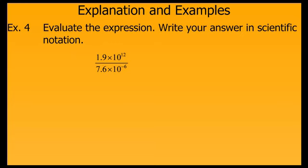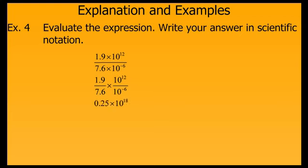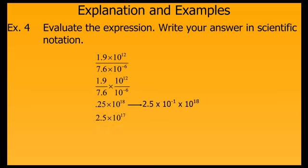This example involves division. Once again, we consider the two parts separately. When we divide 1.9 by 7.6, we get 0.25. When we divide 10 to the 12th by 10 to the negative 6th, we get 10 to the 18th — recall that when you divide with powers of like bases, you subtract the exponents, so 12 minus negative 6 gives us 18. Again, we need to be careful because 0.25 does not meet our criteria of a number between 1 and 10. So we convert 0.25 to 2.5 times 10 to the negative 1, then combine that with the 10 to the 18th to get 2.5 times 10 to the 17th as our final answer in scientific notation.